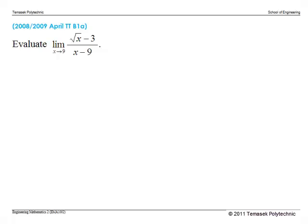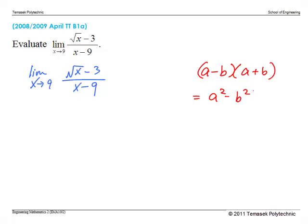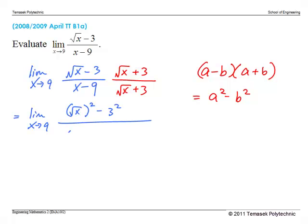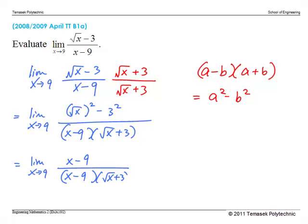Another way to solve this problem without factorization is to use conjugates. We use conjugates when we have square root terms, recalling that (a minus b)(a plus b) equals a squared minus b squared. Multiplying numerator and denominator by the conjugate of the numerator, which is (√x plus 3), gives (√x)² minus 3² in the numerator, which simplifies to x minus 9. Cancelling the common factor (x minus 9) from numerator and denominator, we obtain 1 over (√9 plus 3), which is 1 over 6, as before.